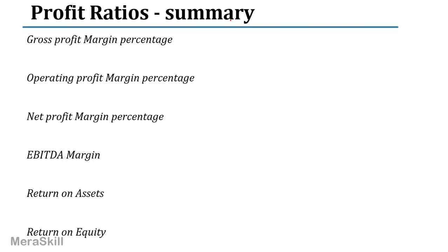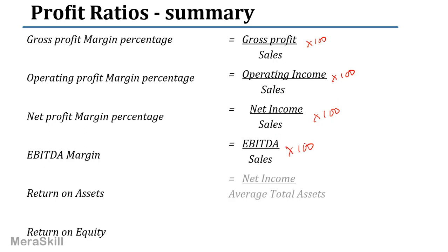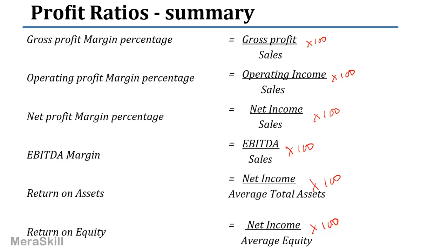Having done all the profit ratios, a brief recap: gross margin percentage is gross profit by sales multiplied by 100; operating profit margin percentage is operating income by sales multiplied by 100; net profit margin is net income by sales multiplied by 100; EBITDA margin is earnings before interest, tax, depreciation and amortization by sales multiplied by 100; return on assets is net income by average total assets expressed as a percentage; and return on equity uses average equity similarly.